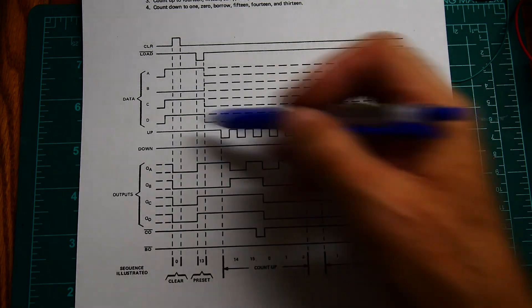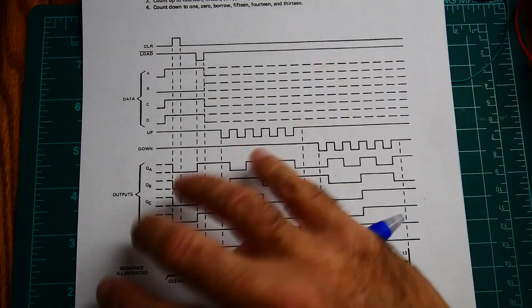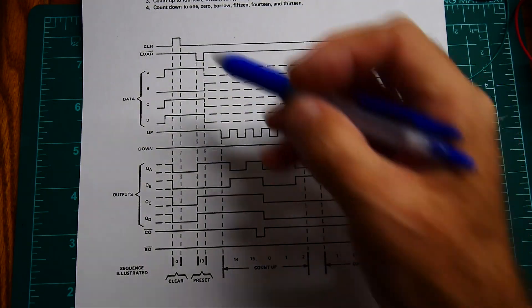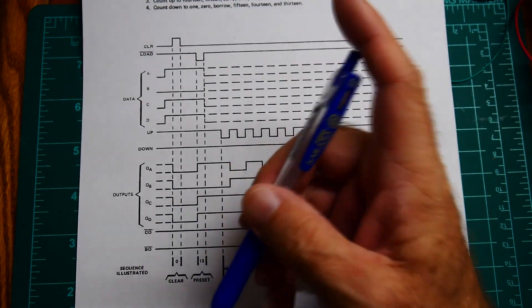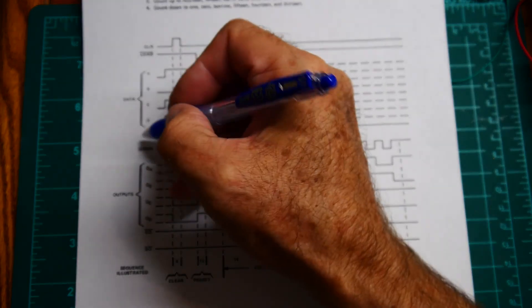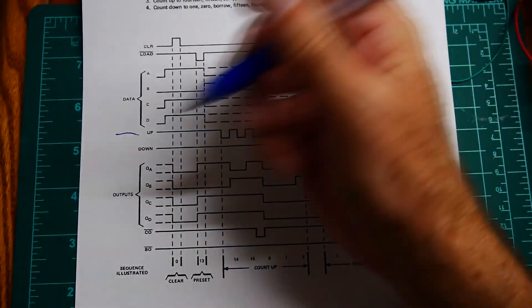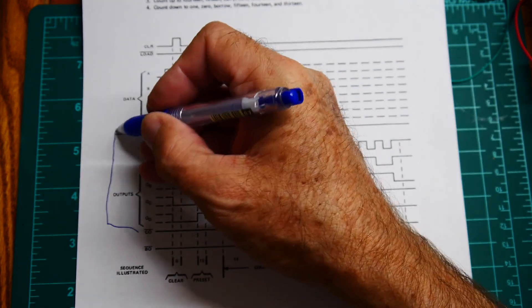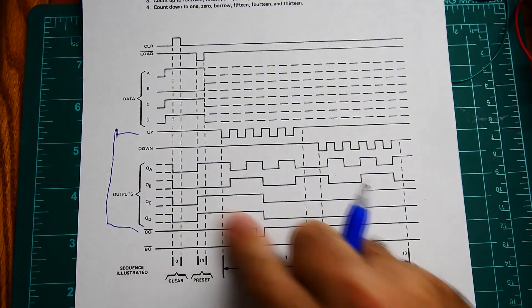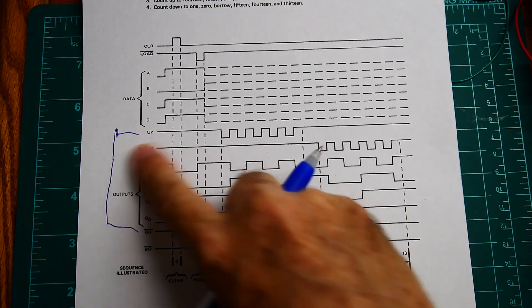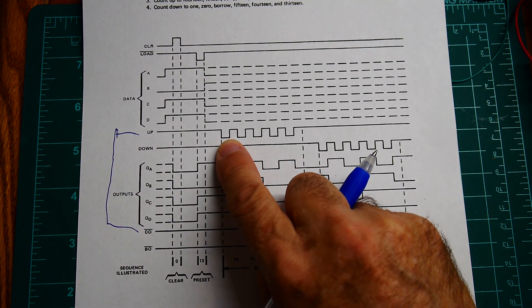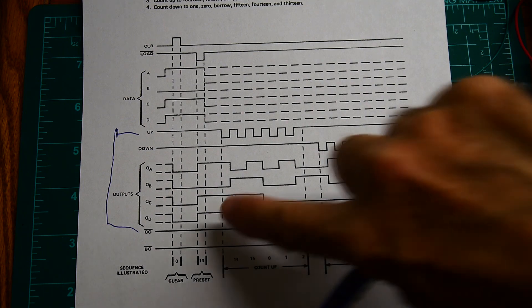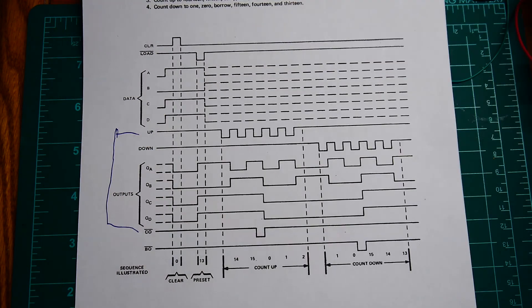So the way that you add, put 4 bits and 4 bits and ripple the two is that on the second device, the up line is connected to the carry out of the last one. So the first 4 bits will generate a carry out and then that pulse will become up for the next counter so if you spill over 15 you'll get a carry and it'll increment the next 4 bits.